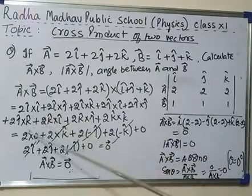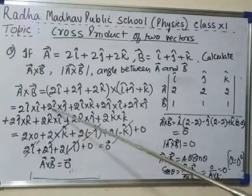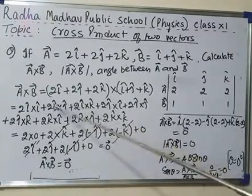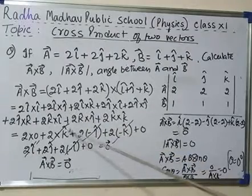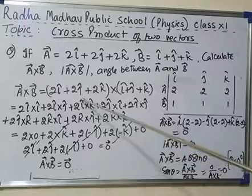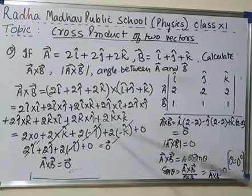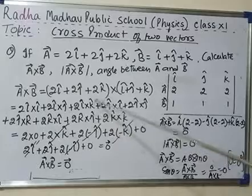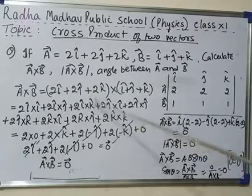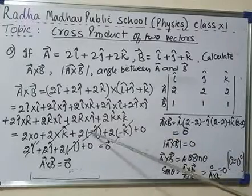Now i cap cross i cap is 0, so 2 into 0 is 0. 2 i cap cross j cap - as you know that i cross j is k cap - plus 2 i cap cross k cap is equal to minus j cap. We know that i cross k is minus j.